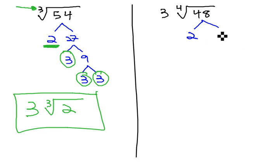48 is divisible by 2, 24 times. 24 is divisible by 2, 12 times. 12 is divisible by 2, 6 times. 6 is divisible by 2, 3 times. And we finally have all prime numbers left under the radical.